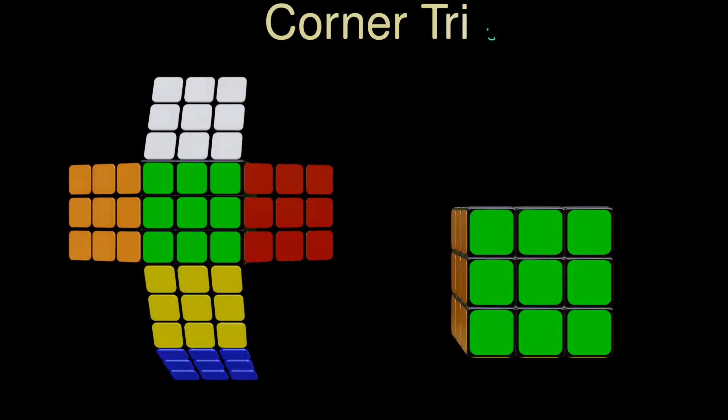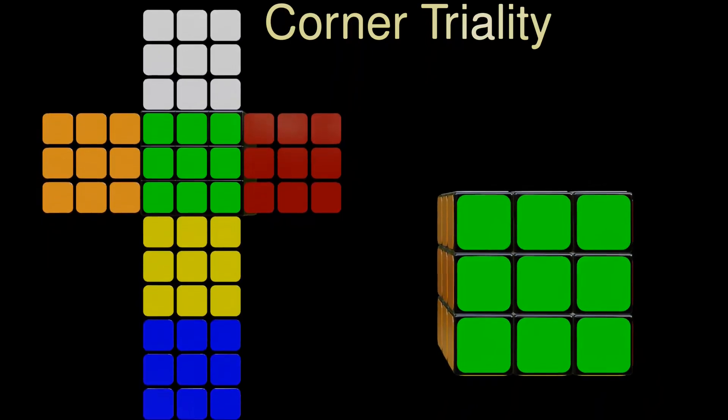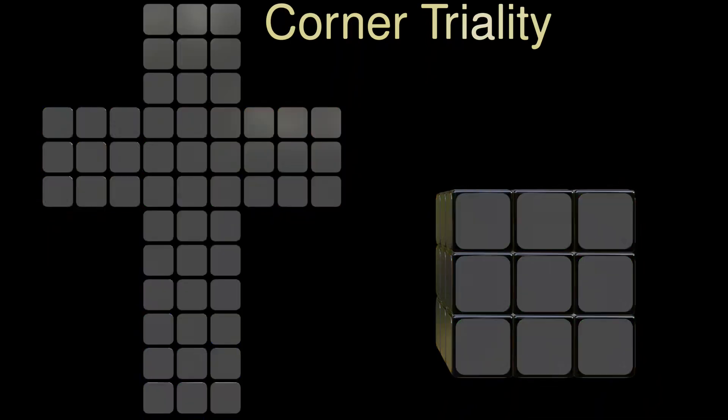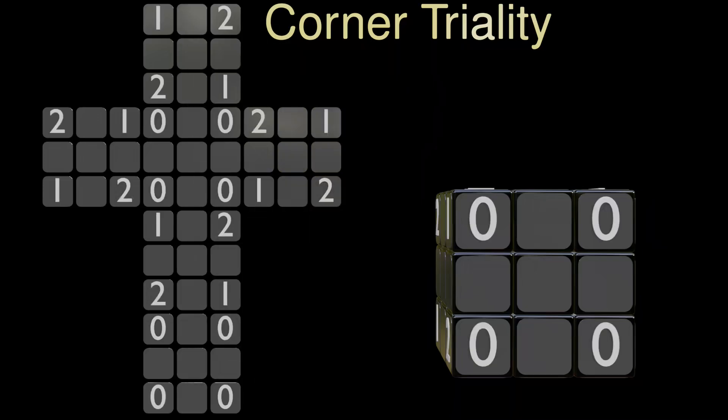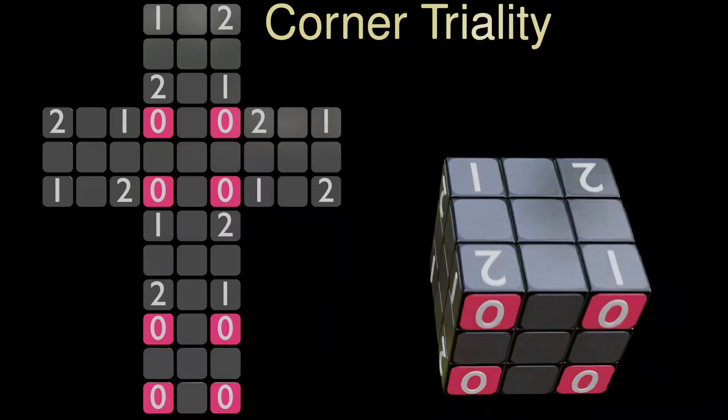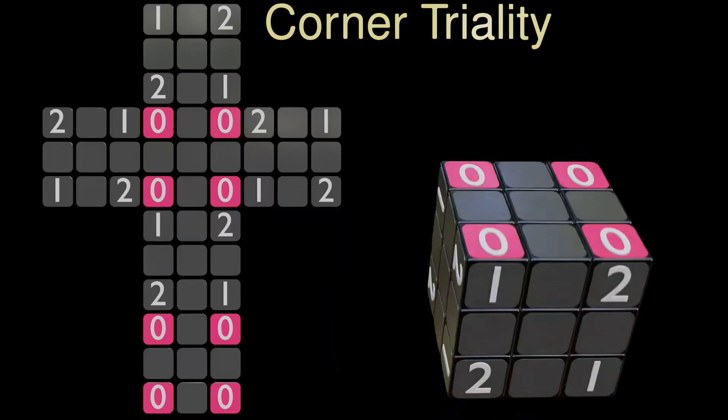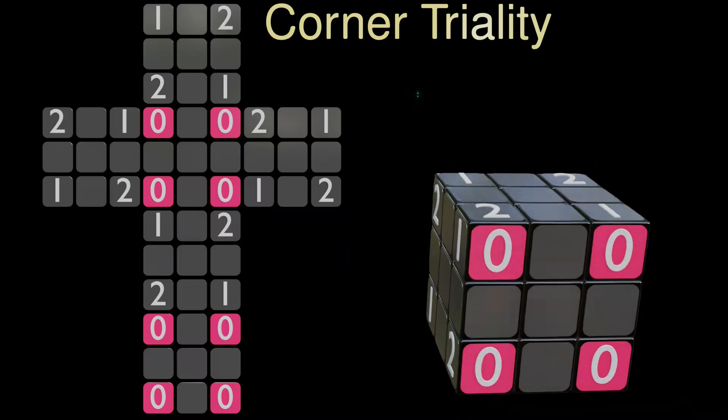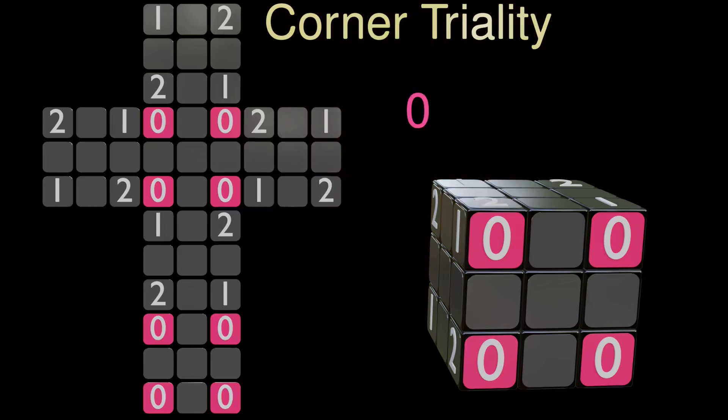A very similar constraint arises for the orientation of the corner pieces. Again, we assign orientation numbers. Since each corner has three faces, we use the numbers 0, 1 and 2. The numbers cycle clockwise around each corner. These orientation numbers, just like the edge numbers, do not rotate when the cube is twisted. By assigning these numbers, we effectively define the orientation of the corner faces. To make it easier to track, we'll color the faces initially labeled with 0.